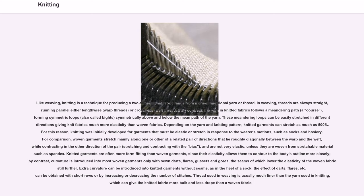By contrast, the yarn in knitted fabrics follows a meandering path — a course — forming symmetric loops, also called bites, symmetrically above and below the mean path of the yarn. These meandering loops can be easily stretched in different directions, giving knit fabrics much more elasticity than woven fabrics. Knitted garments can stretch as much as 500%. For this reason, knitting was initially developed for garments that must be elastic or stretch in response to the wearer's motions, such as socks and hosiery.